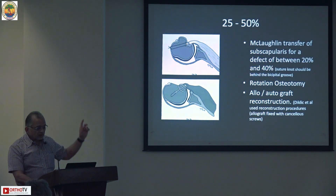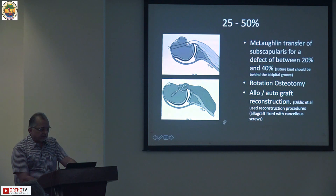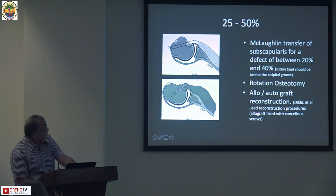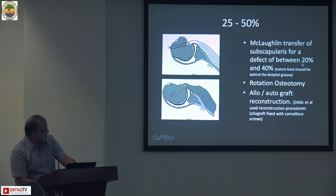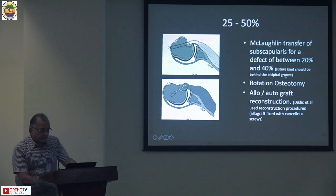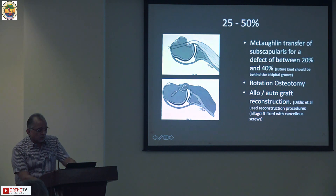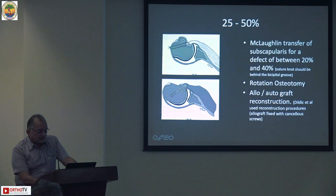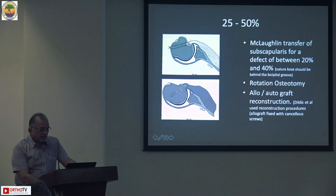Where the defect size is 25 to 50%, you can do a McLaughlin transfer wherein you release the subscap and fill the defect with the tendon. Where the defect is between 20 to 40%, the suture knot should be behind the bicipital groove. Alternatively, you can do a rotational osteotomy or a modified McLaughlin transfer wherein you perform an osteotomy of the lesser tuberosity and transfer it along with the subscap into the defect so the defect is filled up. You can also use an allograft or autograft for reconstruction.